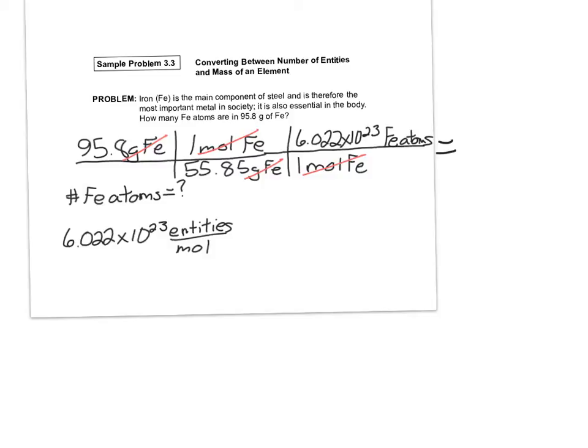So let me go ahead and type this in my calculator. I've got 95.8, and be sure to use parentheses on this problem because you could get it wrong if you don't. So I'm going to put everything at the top in parentheses. 95.8 times 6.022 times 10 raised to the 23, close parentheses,